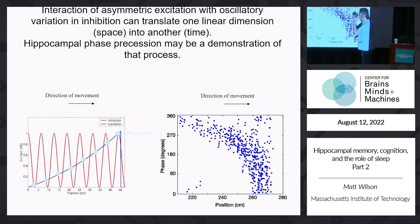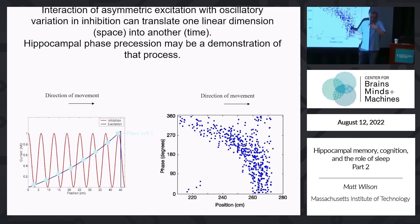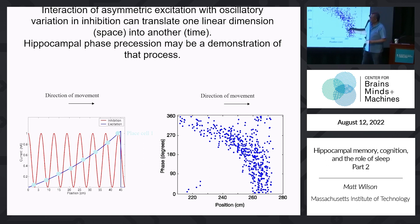This was a model that Mayank Mehta came up with when he first noted two changes: one, that place fields become asymmetric over laps — spatially skewed opposite the direction of motion — and two, that phase precession emerges on a similar time scale. He came up with a simple model trying to explain both of these things.